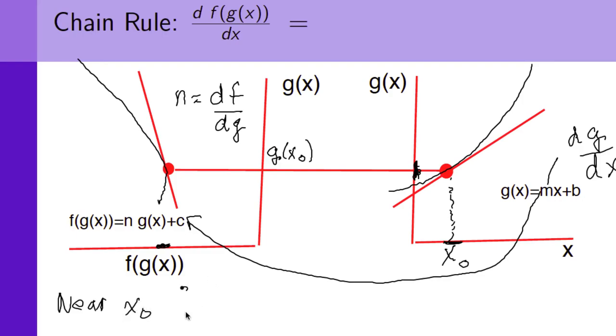we have that f of g of x equals n times g of x. Well, we know what that is. That's equal to mx plus b. So, that's the first part here. Now, we have to add c.